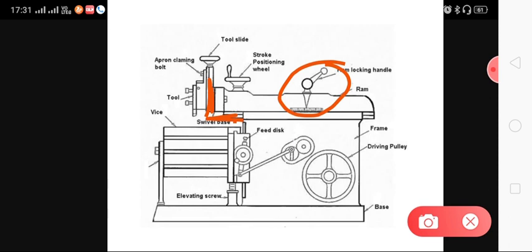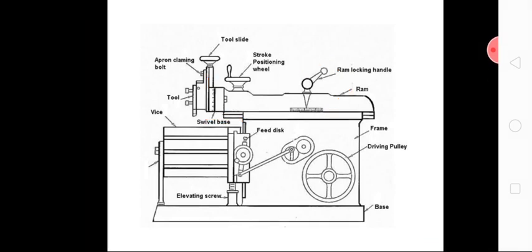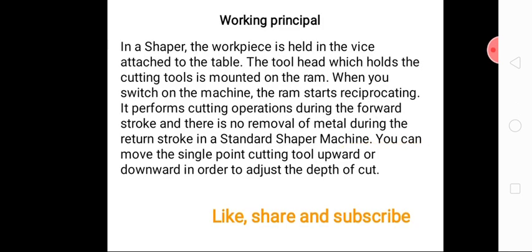If the depth of cut is one millimeter, we can move the tool one millimeter below. If the depth of cut is two millimeters, we can move the tool two millimeters below. After that, we are going to see how the shaper machine works.